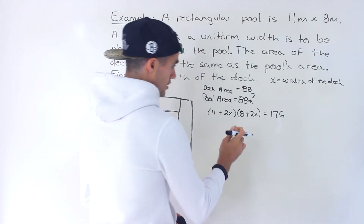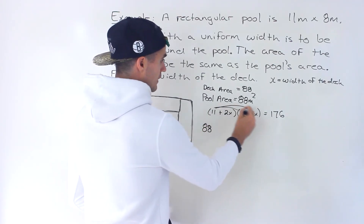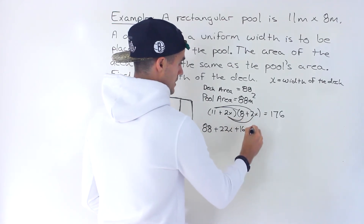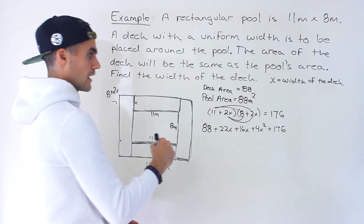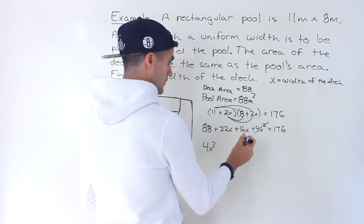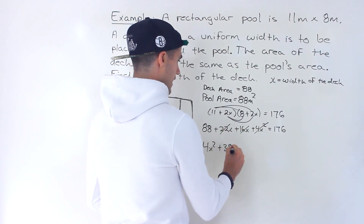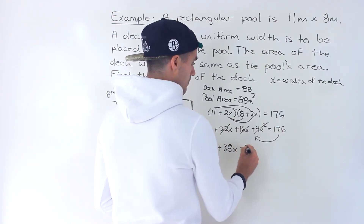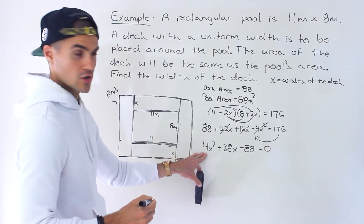Taking the equation (11 + 2x)(8 + 2x) = 176 and expanding: 11 times 8 gives 88, 11 times 2x gives 22x, 2x times 8 gives 16x, and 2x times 2x gives 4x². Bringing everything to the left side, we get 4x² + 38x + 88 − 176 = 0, which simplifies to 4x² + 38x − 88 = 0.